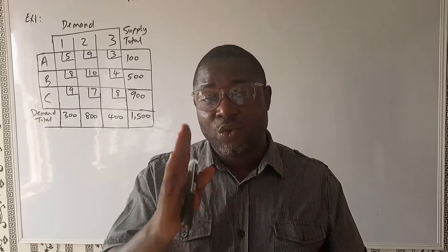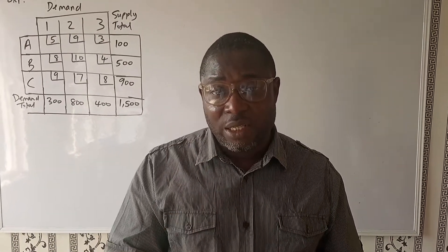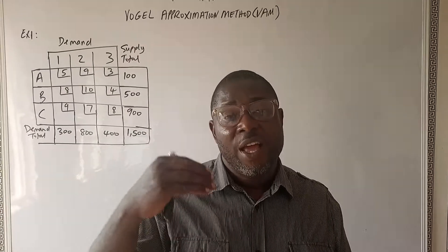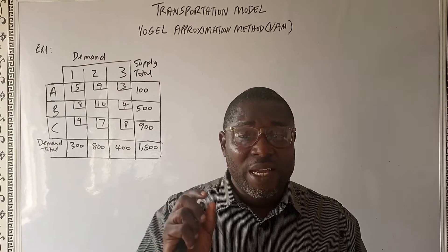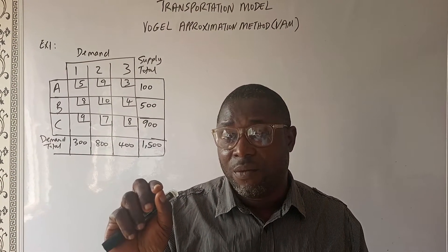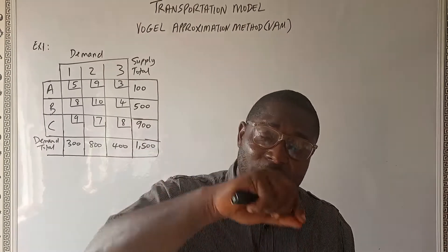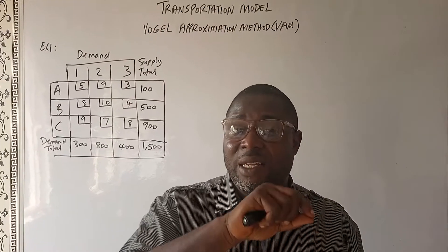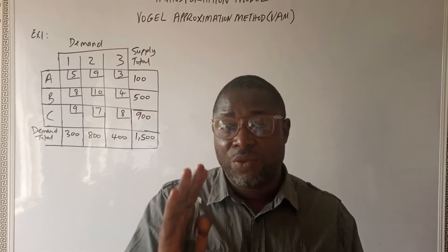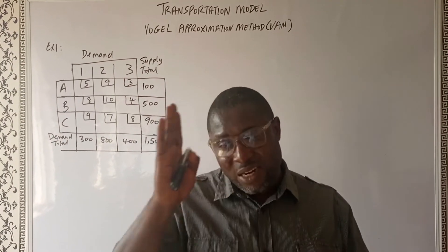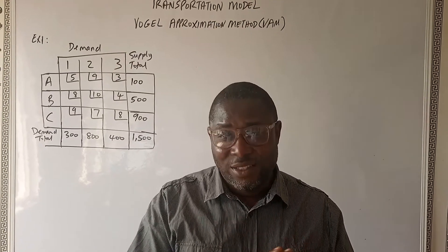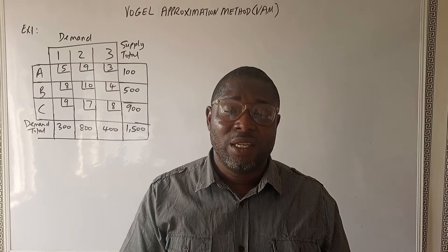If that row or column is fully exhausted, we remove it from the table. We then create a new table and start the process again — finding the difference between the least cost and the next least cost, identifying the focal row or column, and apportioning volume into that cell to satisfy the demand or take care of the supply. We keep removing satisfied rows or columns and creating new tables until all the volumes on the demand and supply side are taken care of. That's what we'll do in looking at this solution. Thank you very much.